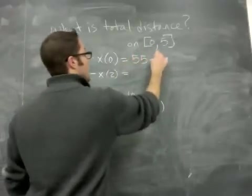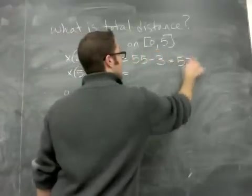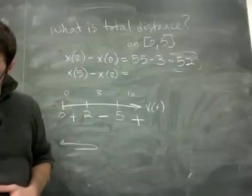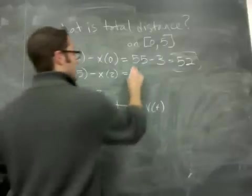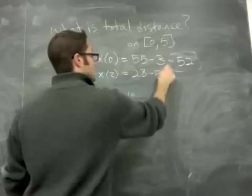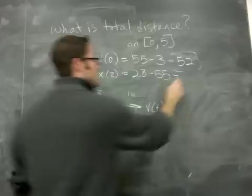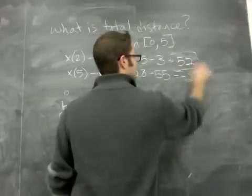55 - 3 is 52. So that's how much it traveled in the first 2 seconds. And then if you plug in 5 and 2, you get 28 - 55, which you'll notice is negative, which just means it's going a different direction.